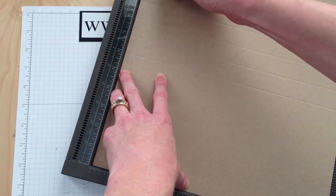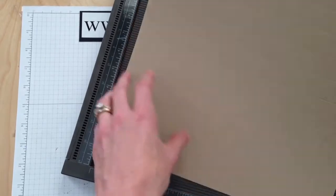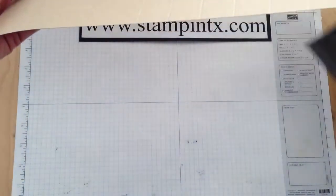Alright, so this is what it should look like. Can you see all the score marks all the way across? So I went in 6 inches, scored it, 6 inches, scored it. Alright, now let me move that score tool out of the way.